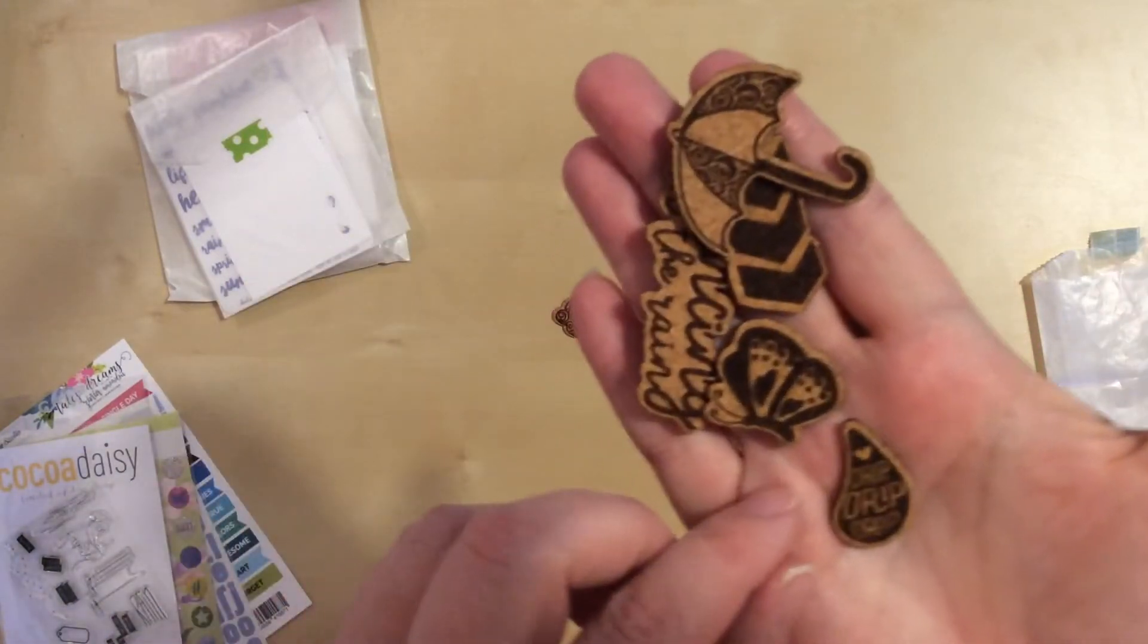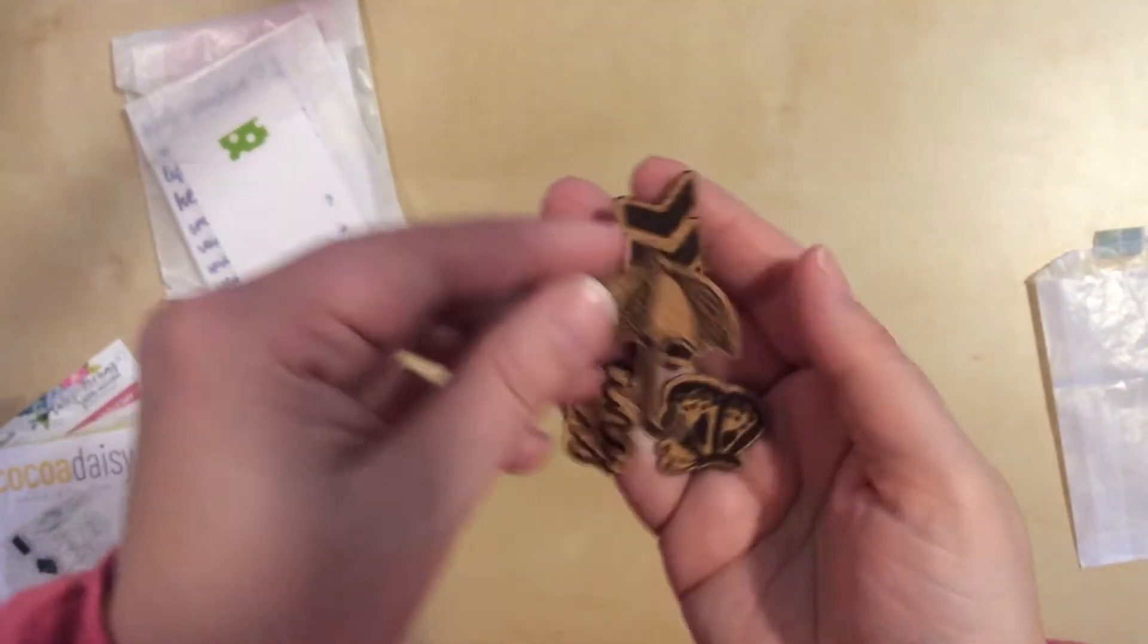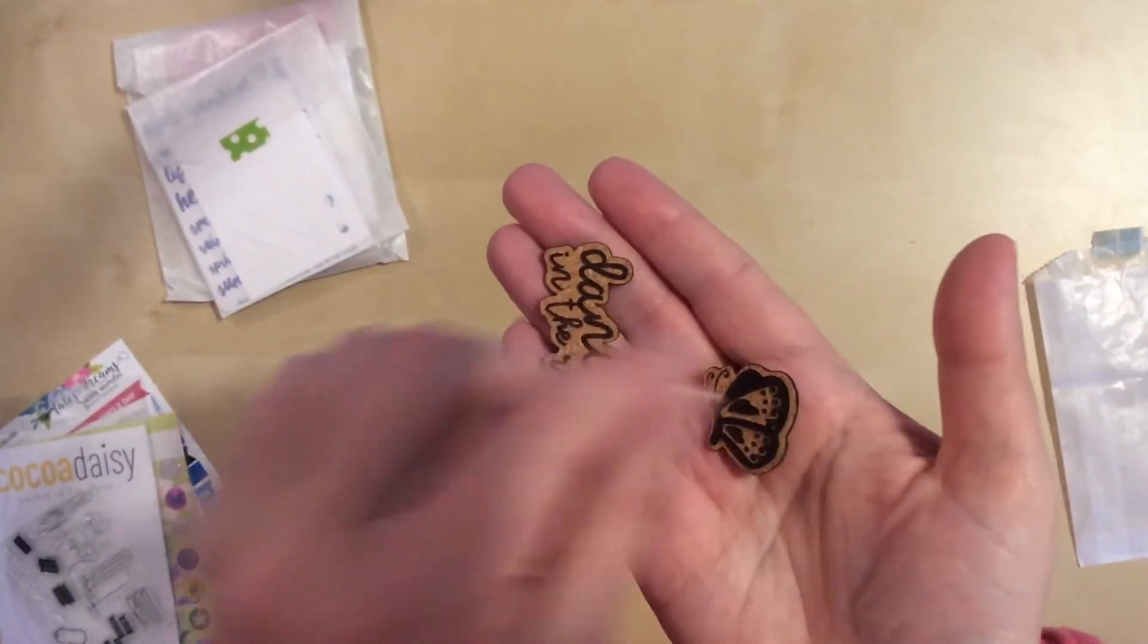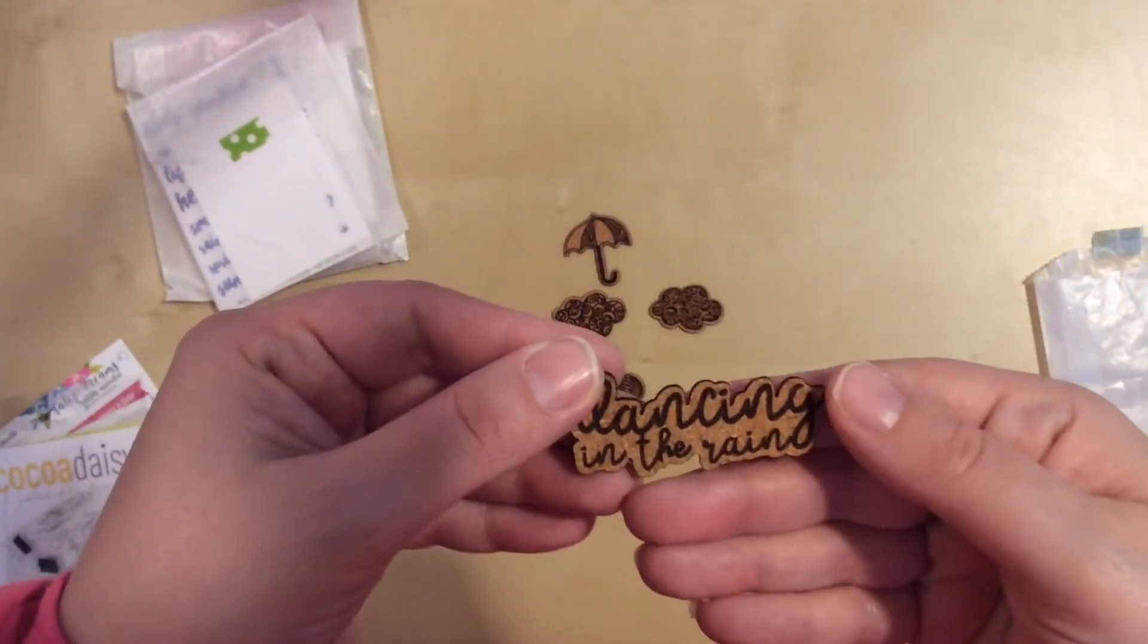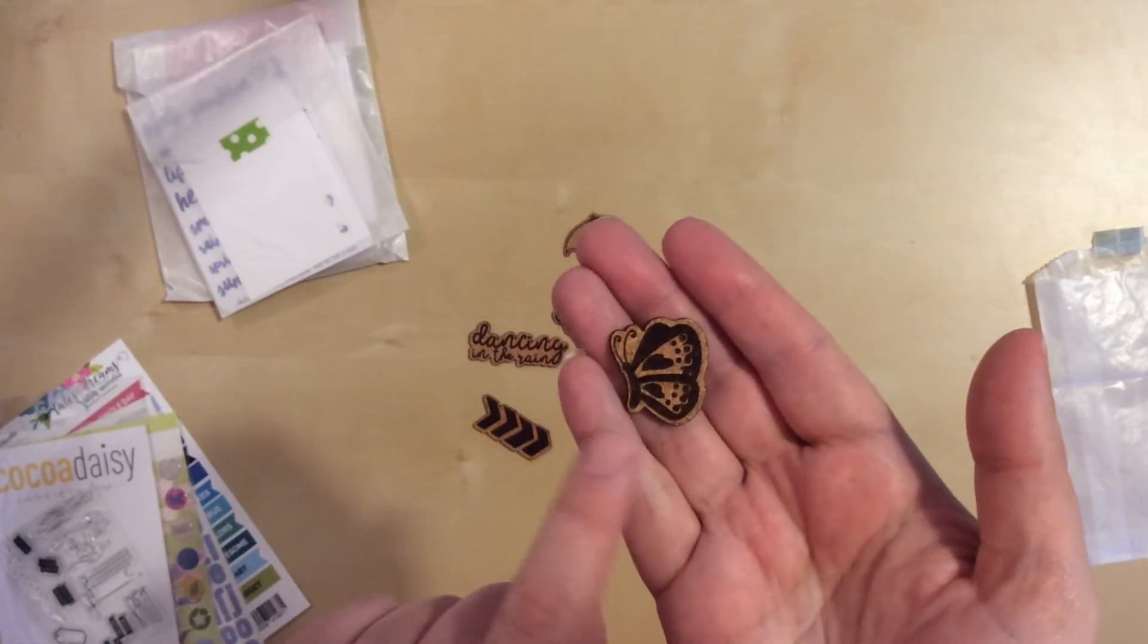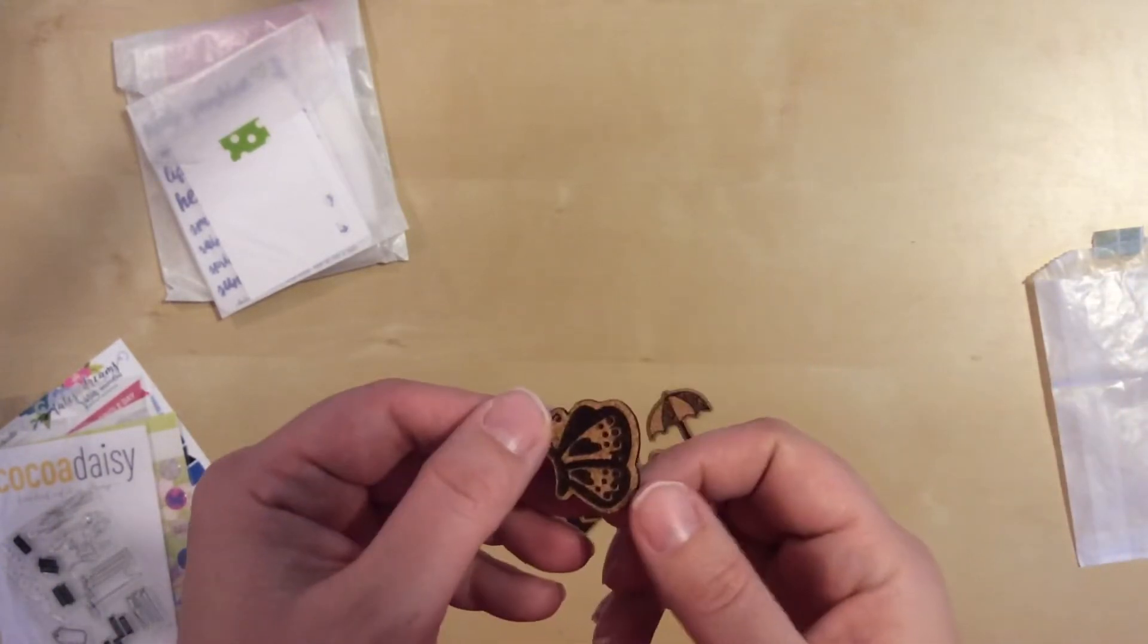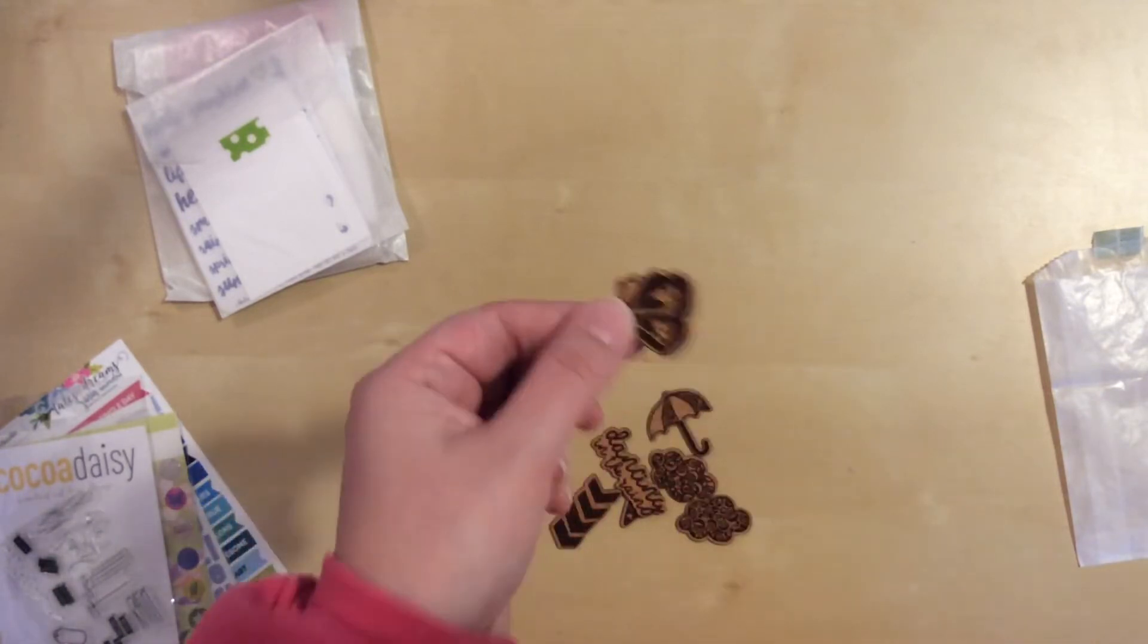Drip, drip, drop. I get it because it's March, probably lots of rain. Just some arrows. Little butterfly, can't go wrong with butterflies. Dancing in the rain. I'm going away with my kids for spring break and one of the things on our list is to go to the butterfly house. So I might be able to work this into my spring break travel album.